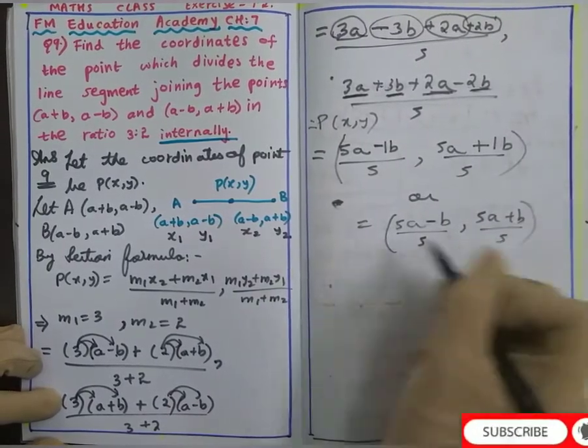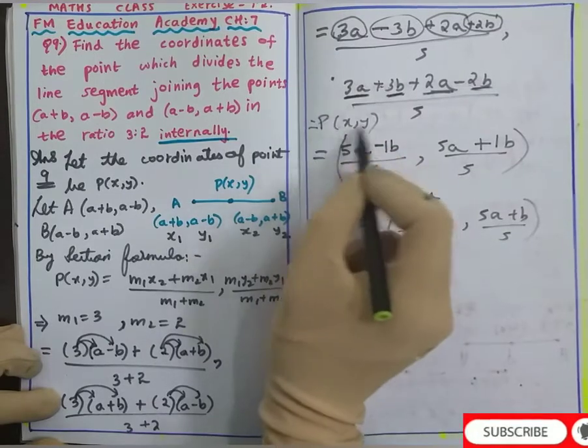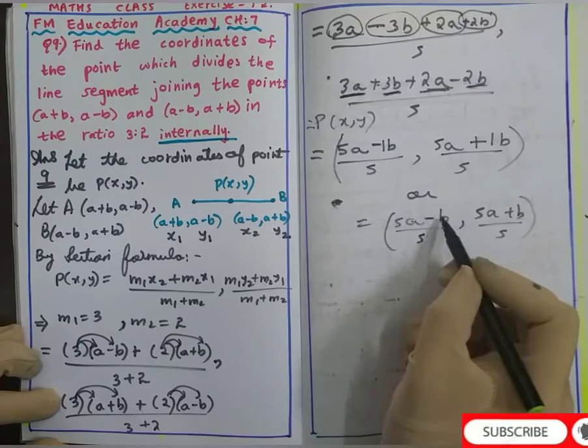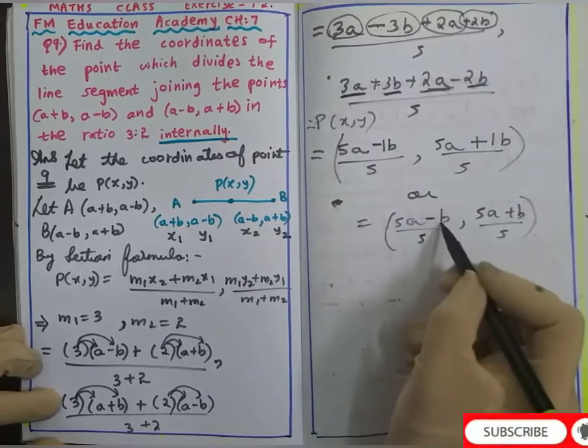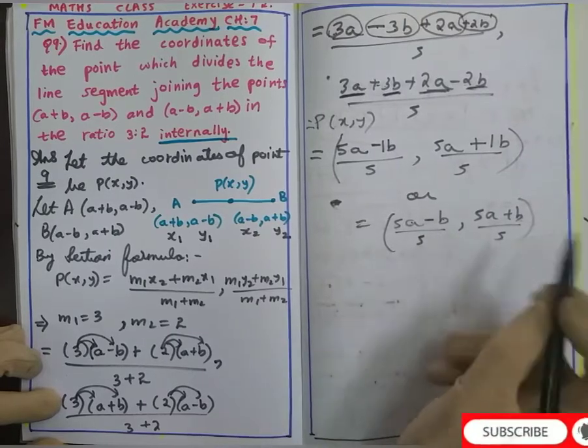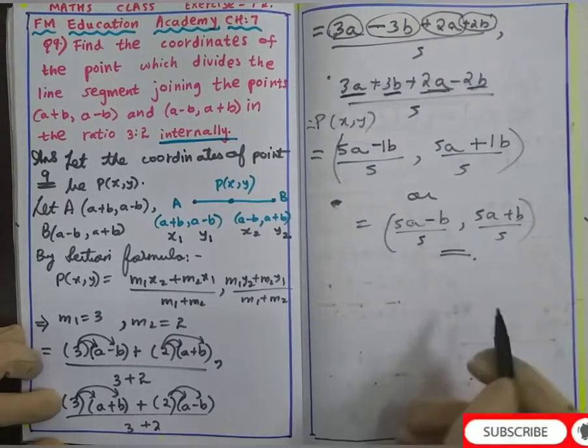Why is this my answer? Because I cannot simplify it more. I just have to find the coordinates of this point. As one is a and other is b, I cannot add or subtract them. So we cannot do anything here. We are stopping here. This is my answer.